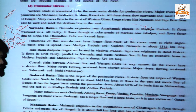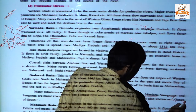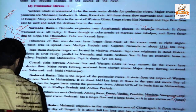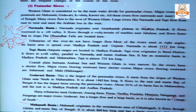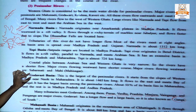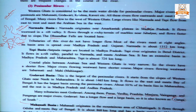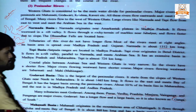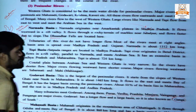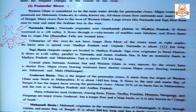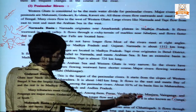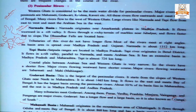Godavari has a longer flow and a large basin, so it is known as the 'Ganga of the South.' What you have to remember: it originates from Maharashtra; its length is 1465 kilometers; 50 percent of its basin lies in Maharashtra; and its tributaries are Purna, Varda, Pranita, Manjara, Ven Ganga, and Pen Ganga.